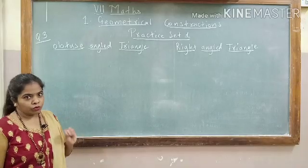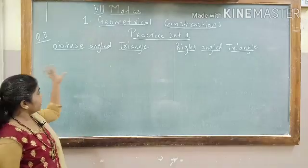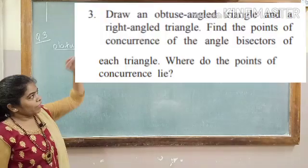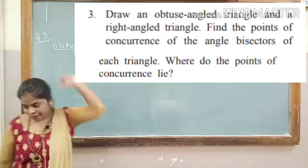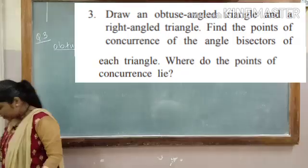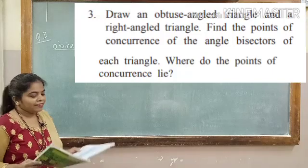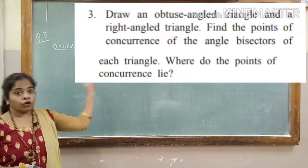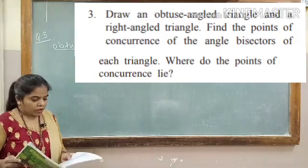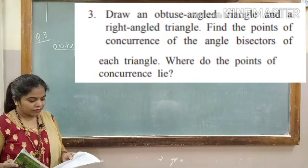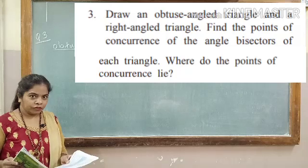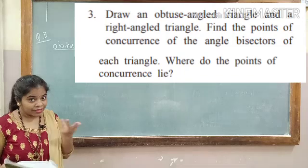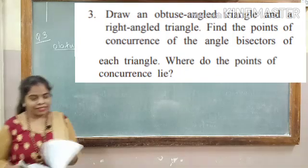Students, we are going to continue with question number 3 of the same practice set. You will see the question flashing up there on your screen. We will read the question: Draw an obtuse angled triangle and a right angled triangle. We are going to draw two different types of triangles. Find the points of concurrence of the angle bisectors of each triangle. Where do the points of concurrence lie? Let's see its answer.